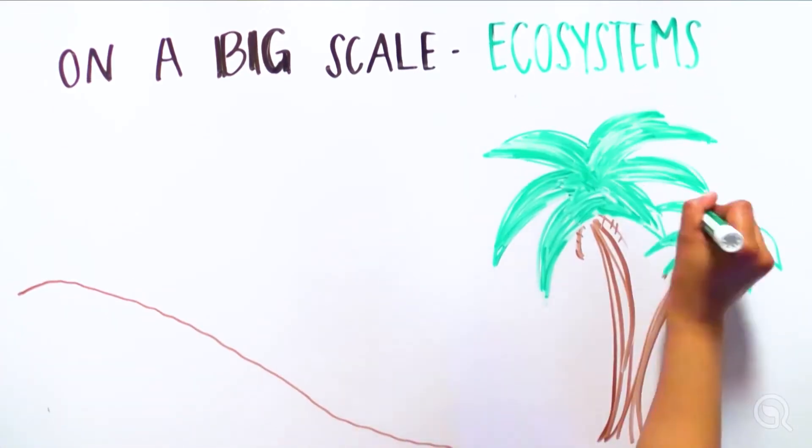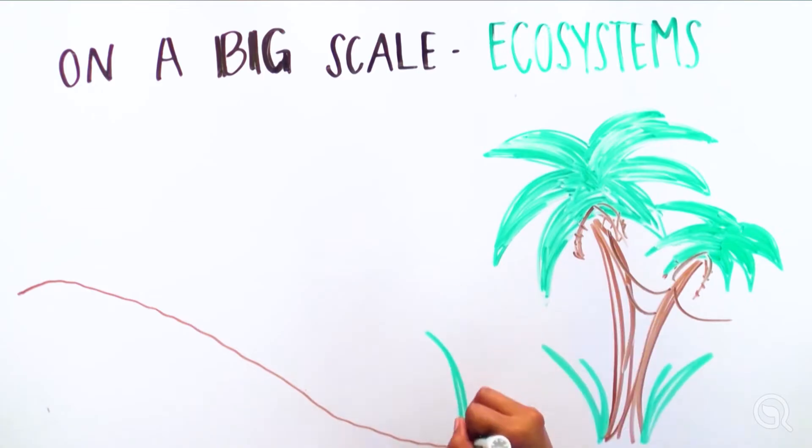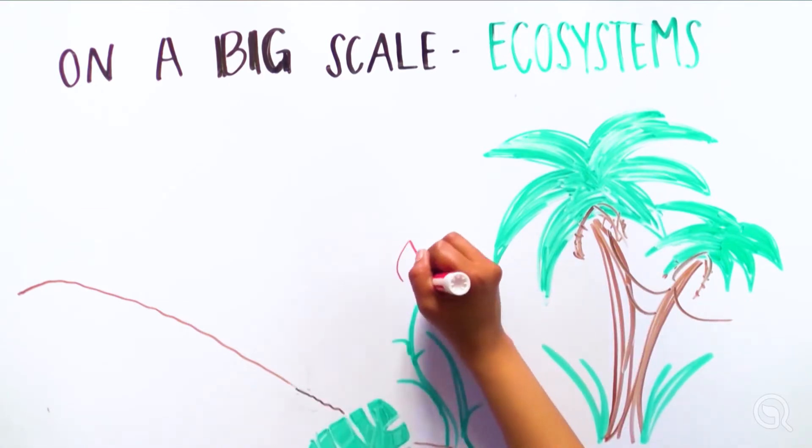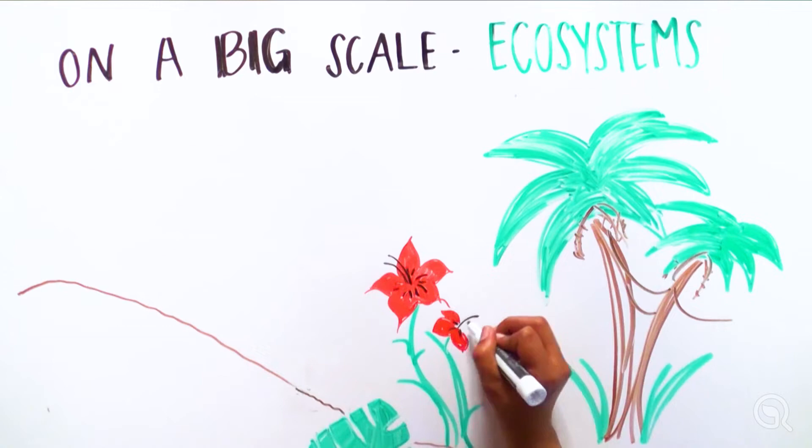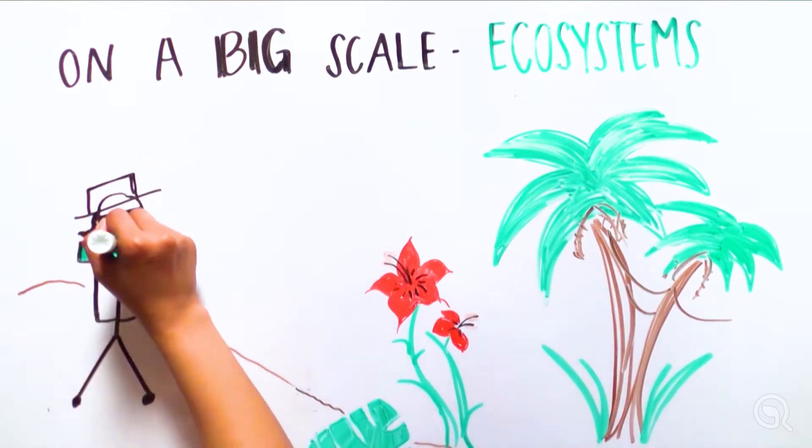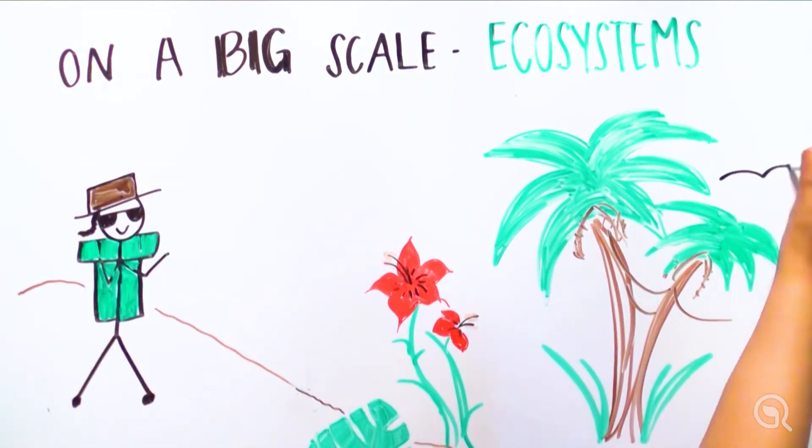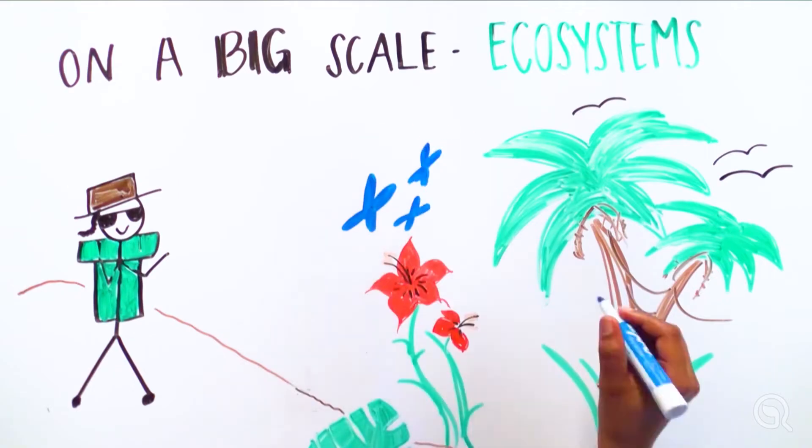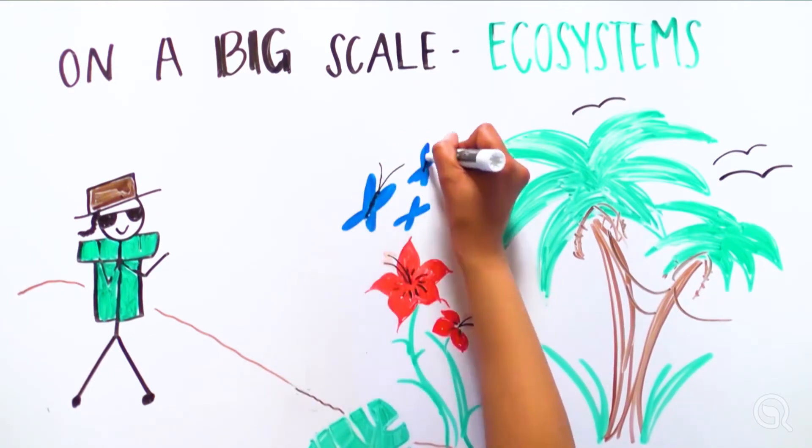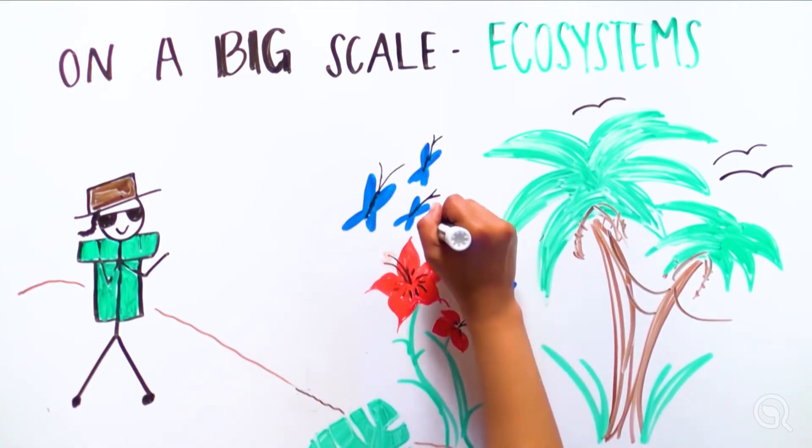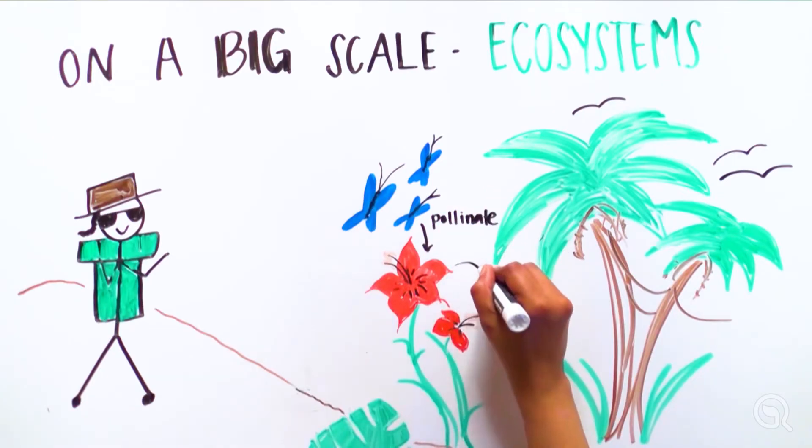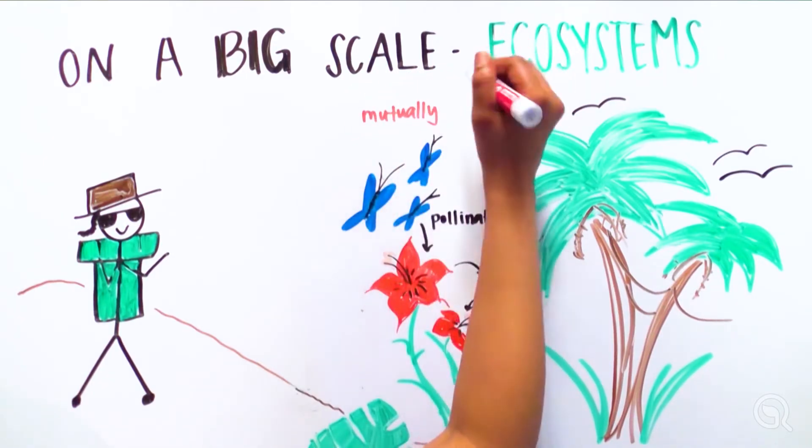Let's look at the structure of the tropical rainforest ecosystem found near the equator. There are trees, flowering plants, birds, butterflies, and other species in this diverse ecosystem. Look closer and observe specific populations of species interacting with each other. Like this butterfly population pollinating specific flowering plants. A mutually helpful relationship.